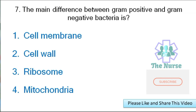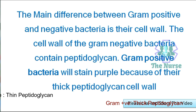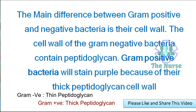Next question: The main difference between gram-positive and gram-negative bacteria is — cell membrane, cell wall, ribosome, or mitochondria? The main difference is their cell wall. The cell wall of gram-negative bacteria contains peptidoglycan. Gram-positive bacteria will stain purple because of their thick peptidoglycan cell wall.